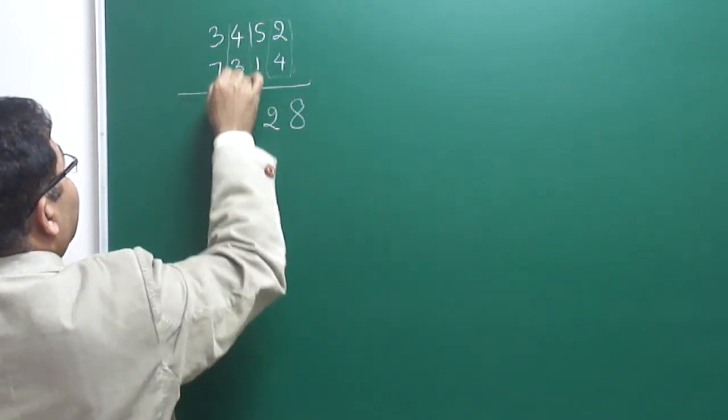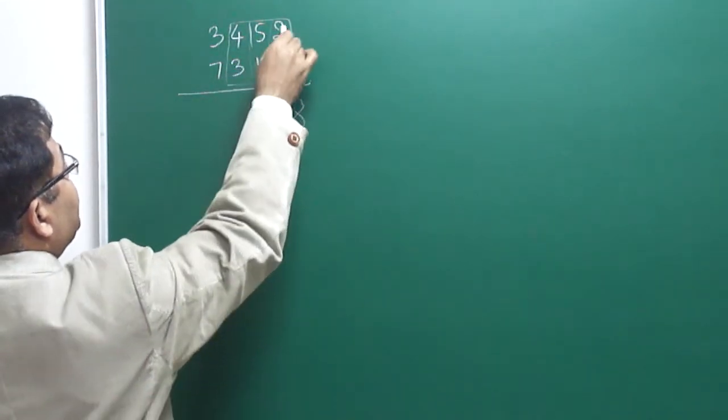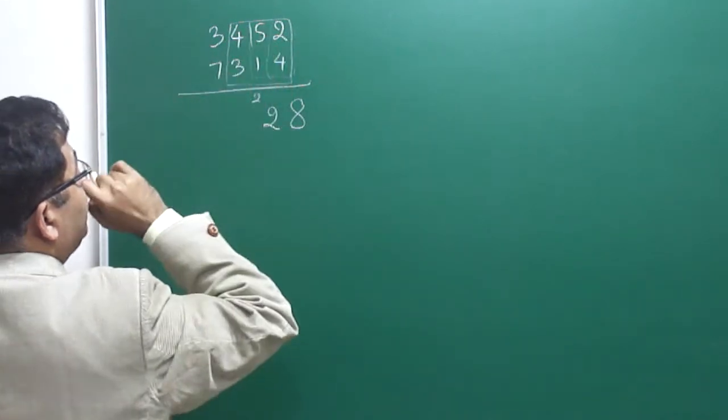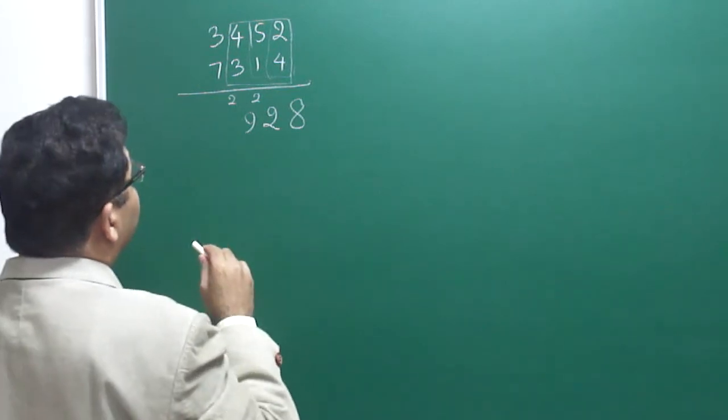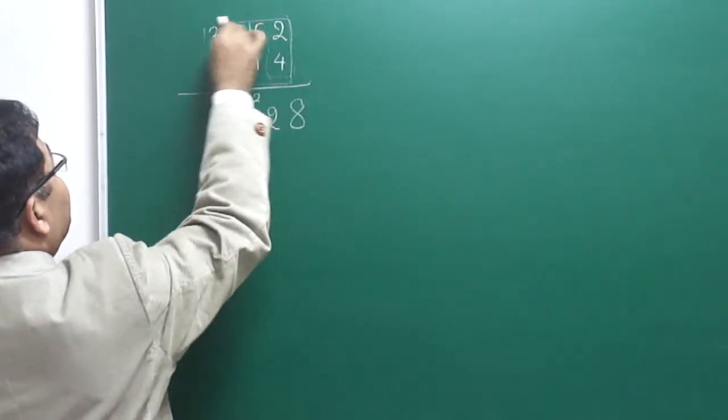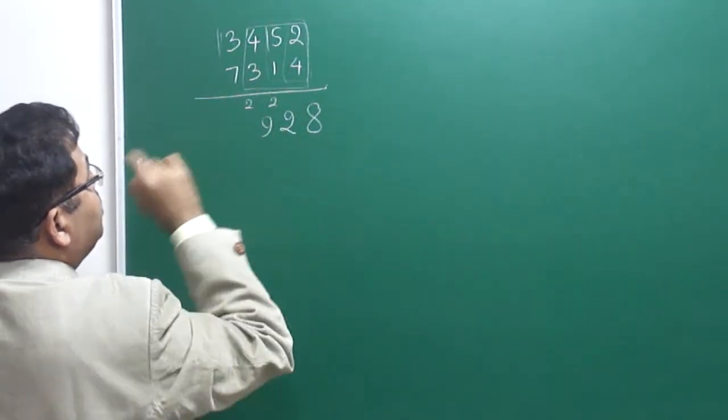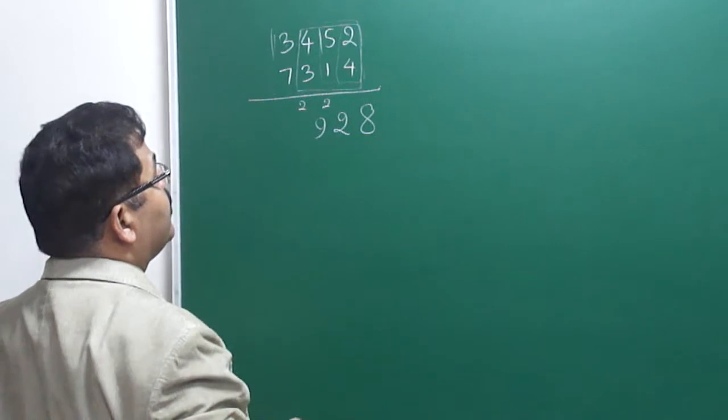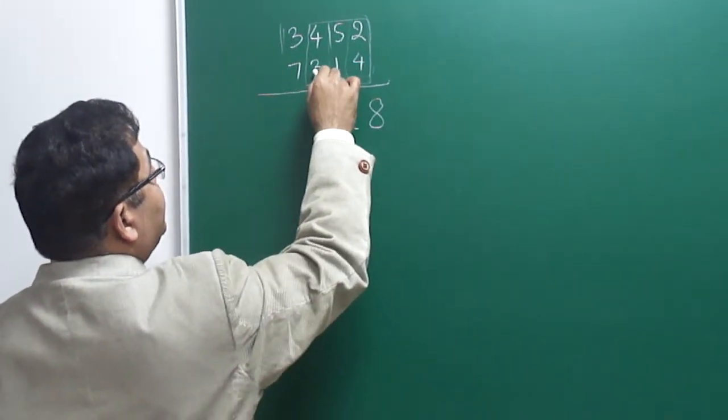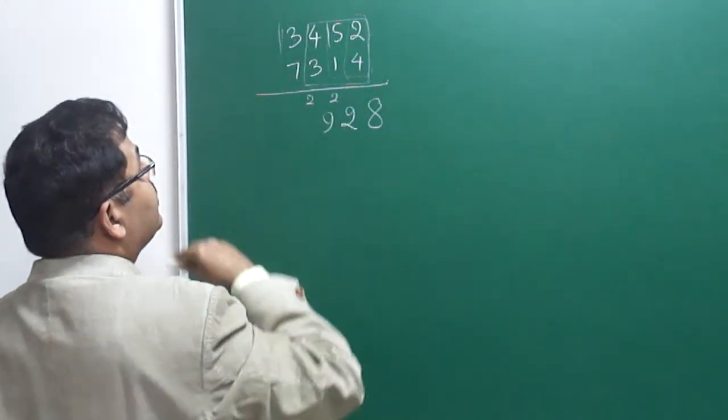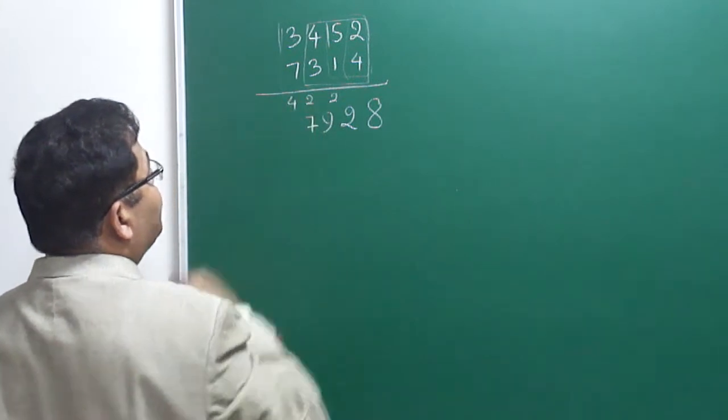And thereafter taking 3 at a time, what will happen? 4, 4, that's 16 plus 6, 22 plus 5, 27 and 2, 29. So carry 2 again and now taking all 4 together. So what will happen? 3, 4, that's 12 and 7, 2, that's 14. 12 plus 14 is 26 plus 4, 30 plus 15 is 45. 45 plus 2, 47, carry 4.